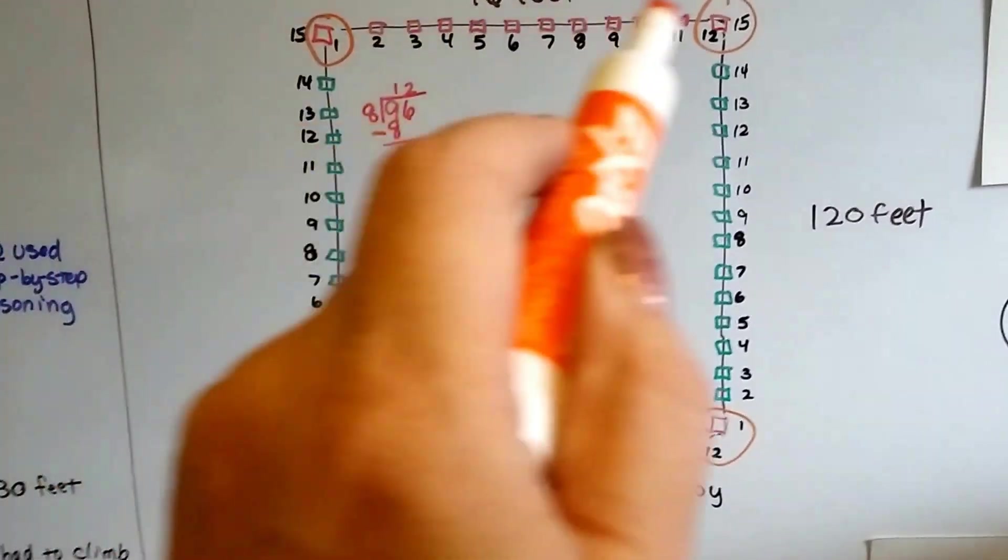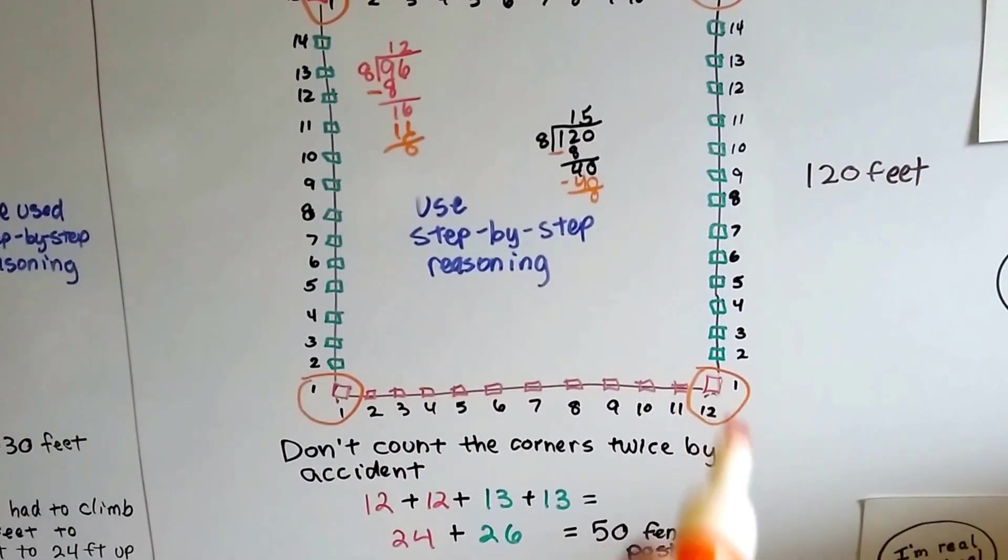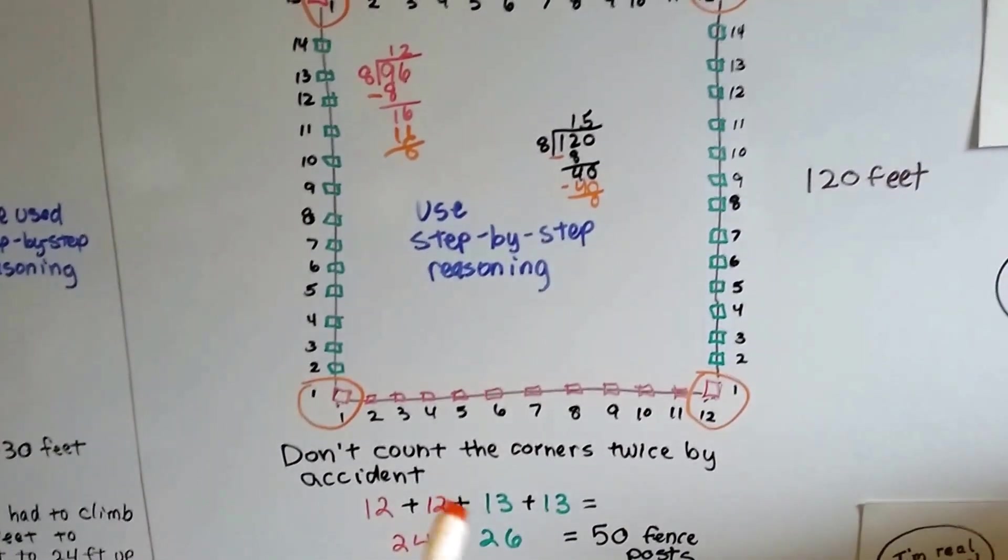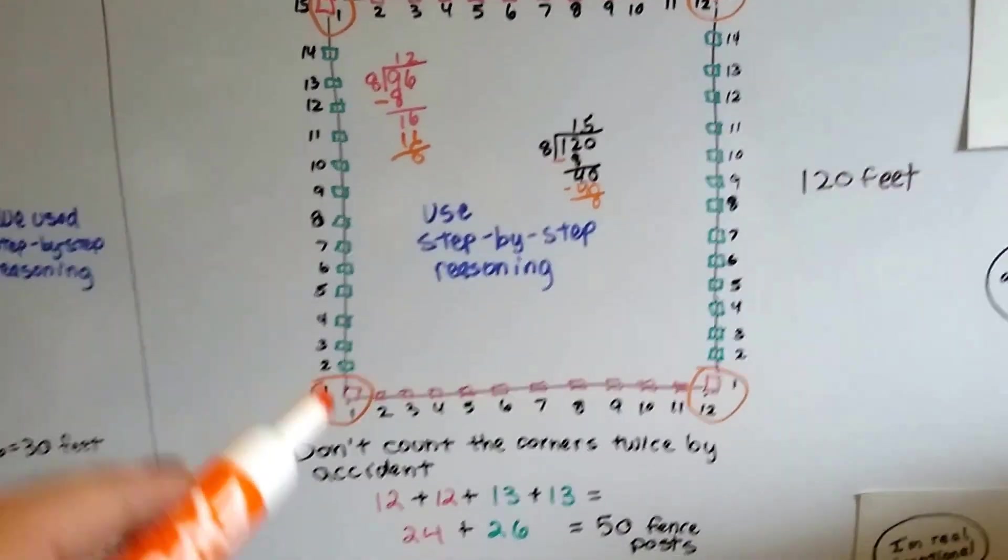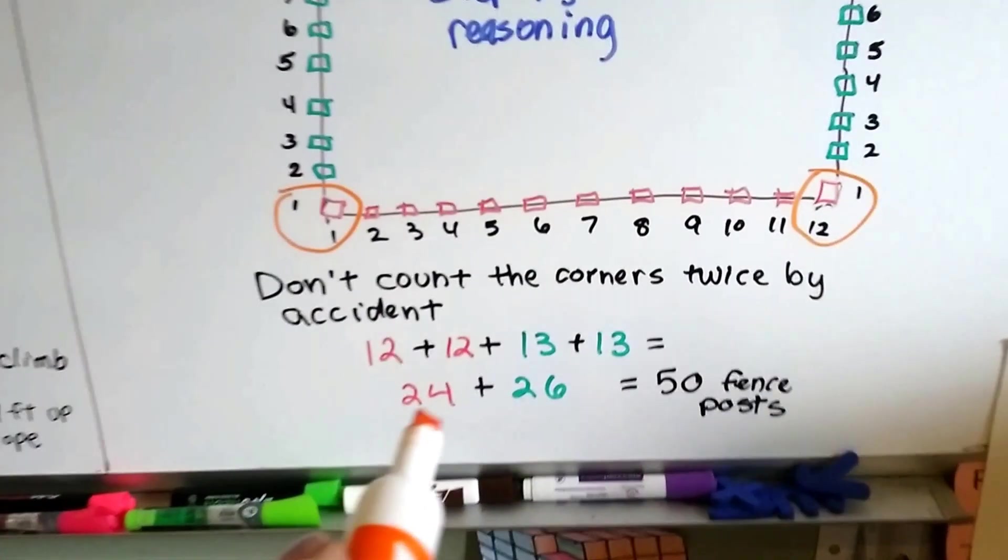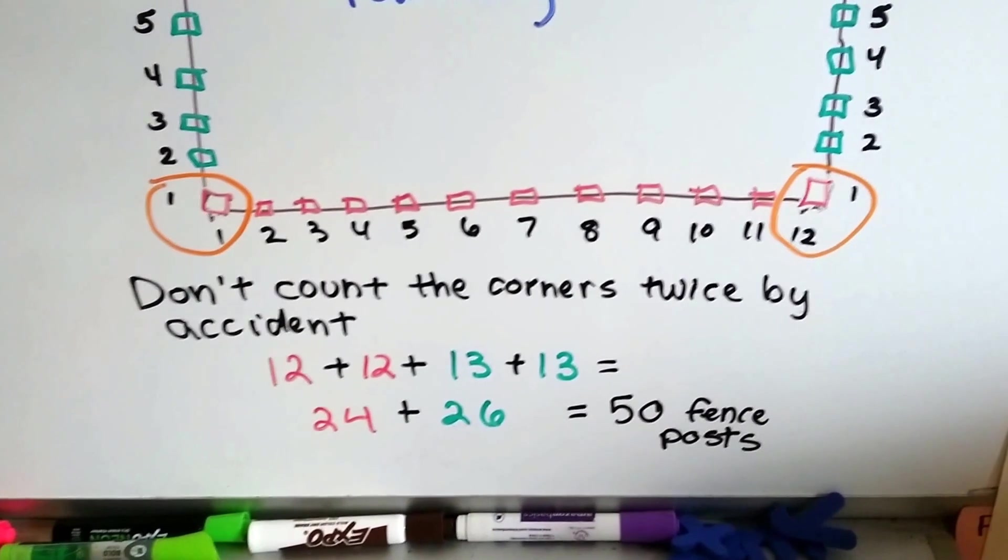I got twelve fence posts and twelve fence posts. So, that's twelve plus twelve plus thirteen plus thirteen. And that got me twenty-four plus twenty-six, which is fifty fence posts.